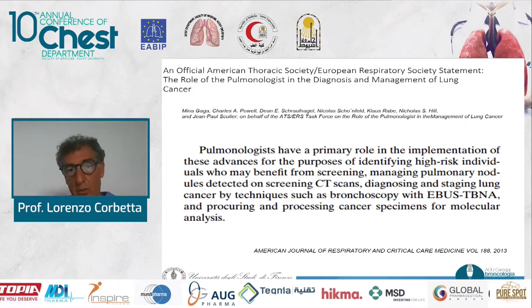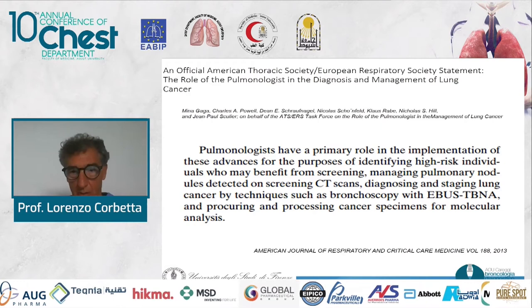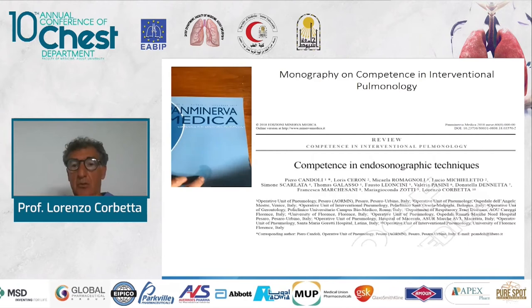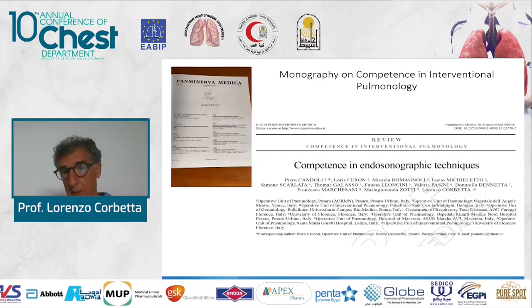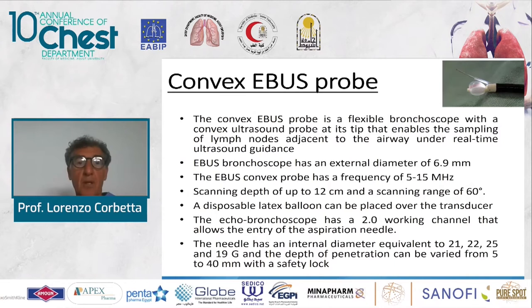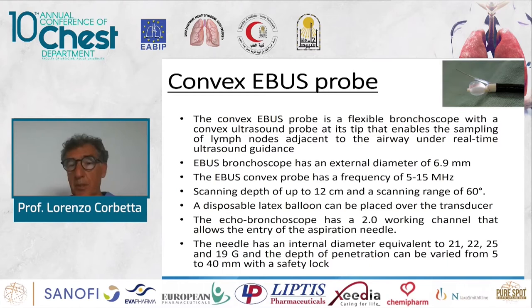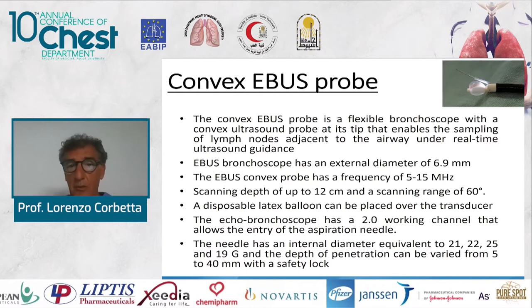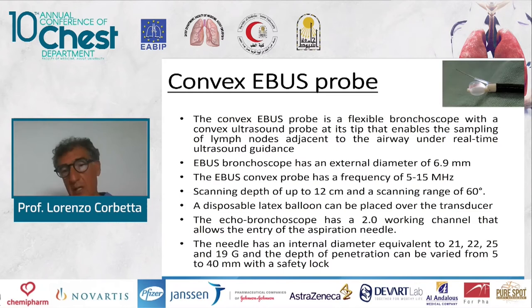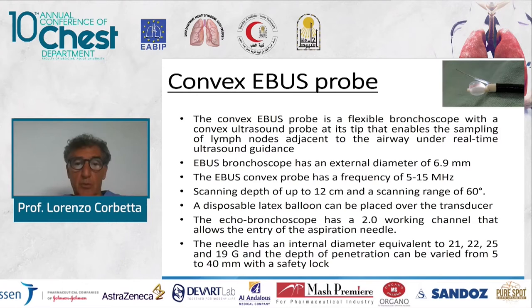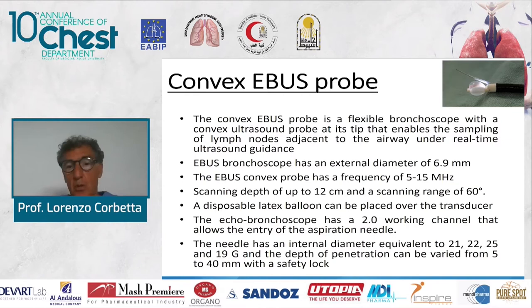The pulmonologist manages all phases of the diagnosis and treatment of lung cancer. In this context, endobronchial ultrasonographic techniques are among the most important. EBUS is a flexible bronchoscope with a convex ultrasound at its tip that enables sampling of lymph nodes adjacent to the airway under real-time ultrasound guidance. It is slightly larger than a standard bronchoscope, so it can be used like a bronchoscope through the upper airways, through an endotracheal tube, or through a rigid bronchoscope.